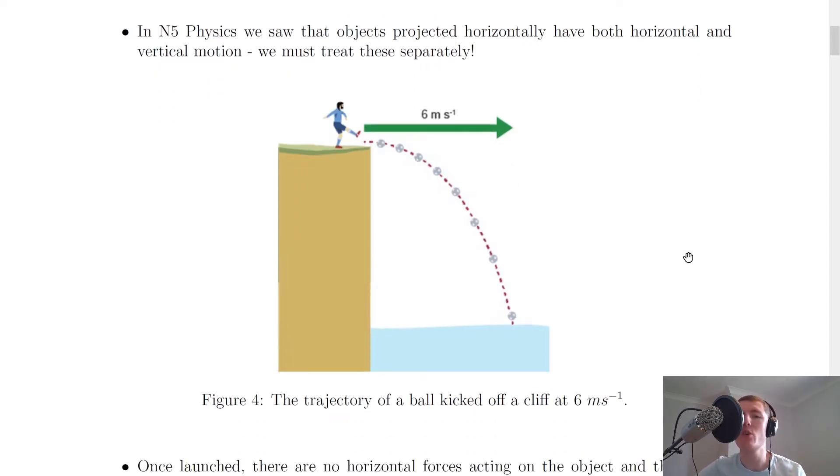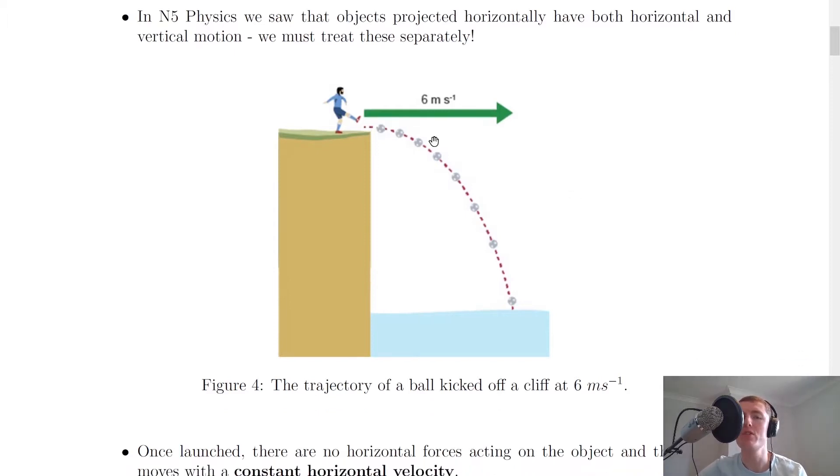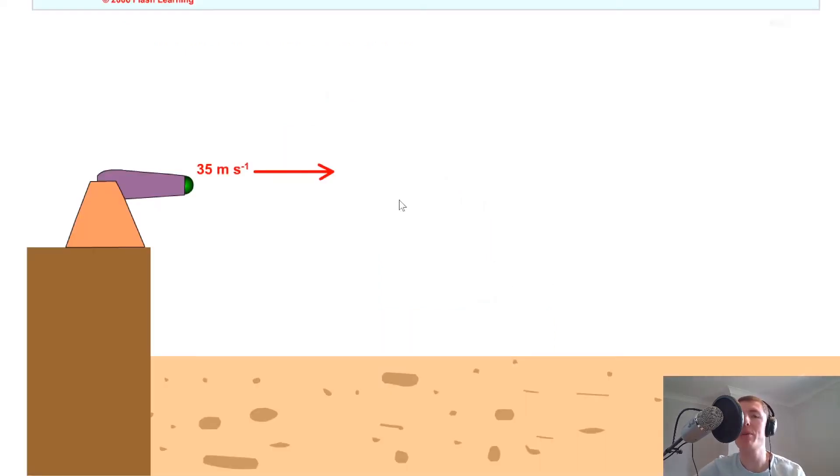The picture here shows an example of this type of motion. Let's say you had a footballer kicking a ball off the edge of a cliff at 6 metres per second, where we would know that it had a constant horizontal velocity of 6 metres per second, but that doesn't tell us anything about the vertical motion. Another example is a cannonball fired horizontally from a cannon at 35 metres per second. Hopefully you remember that kind of motion from National 5.